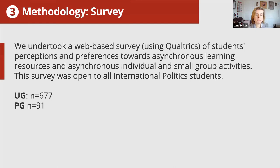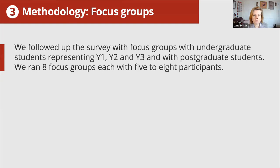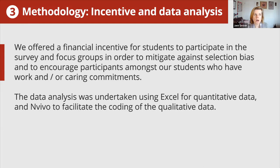So how did we do it? We started with a survey of students, open to all students — so potentially 770 or so students could have answered. We followed that up with some focus groups, putting students into year groups where possible and also talking to postgraduate students to see any differences by year of study. We did eight focus groups in total. We offered an incentive — students got vouchers if they took part. We did analysis using Excel for quantitative data and NVivo for coding the qualitative data, which our research assistant Sarah did a lot of work on.